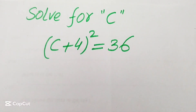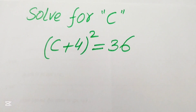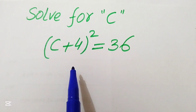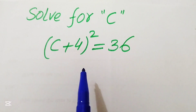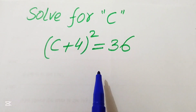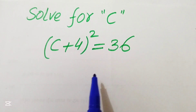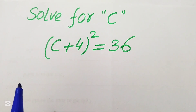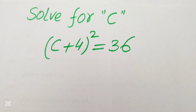Hello everyone, welcome to solve this nice algebra problem. Here we have (c + 4) whole square equals to 36, and we will solve this problem for the values of c.